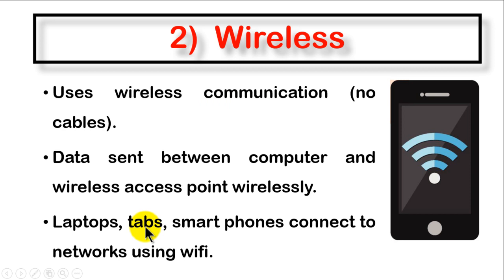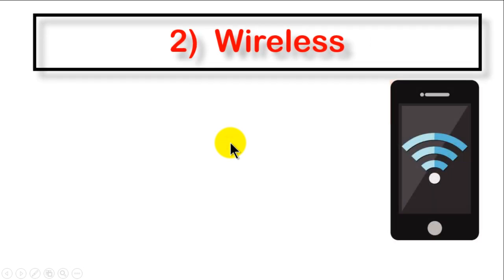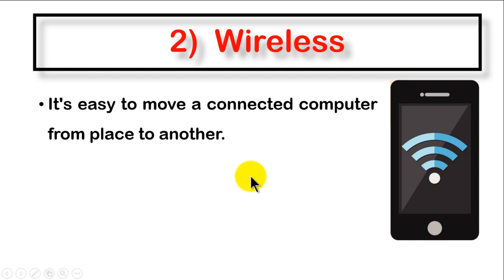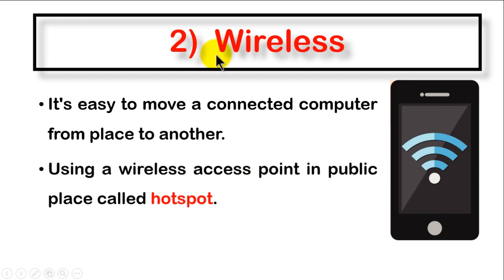You are not going to have a network cable in your tablet or smartphone, so the only way to communicate using them is wireless. With wireless communication, it is very easy to move a connected device from place to another, because there is nothing physical limiting its movement — it's connected wirelessly through the air.